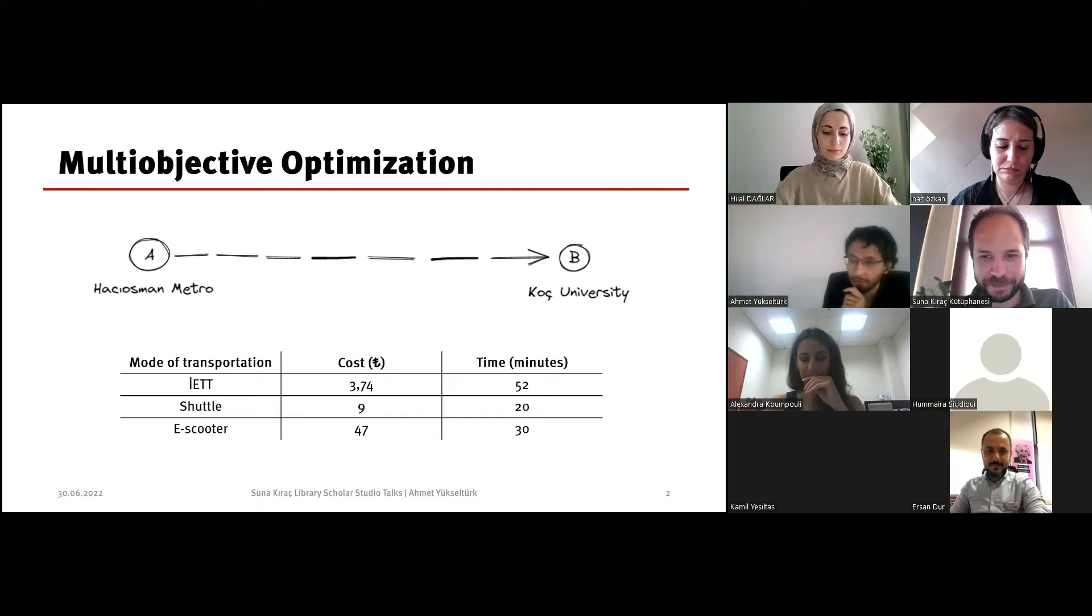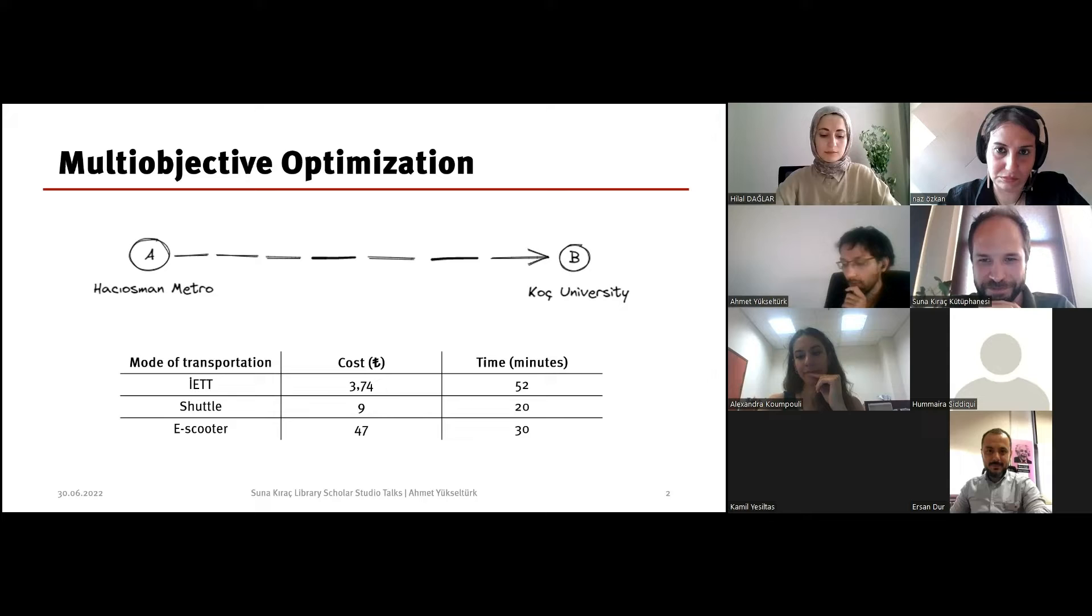What happens if I increase my criteria? Now time is also important. Life is not easy. When I look at the option with minimum cost, it's public transportation. But if I look at the time, it's the shuttle. What happens is that I extend the definition of best. I will select options such that if I improve one criterion, I will get a decrease in another criterion. These will be my optimum solutions now.